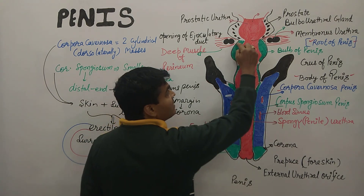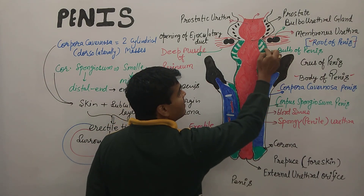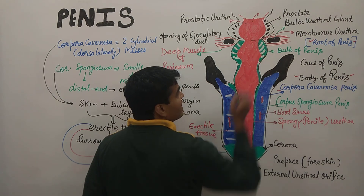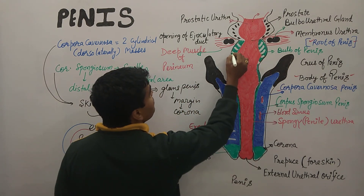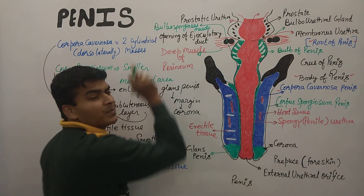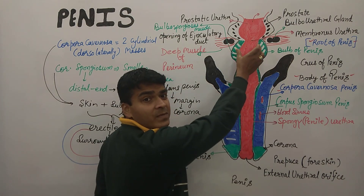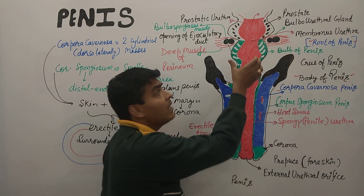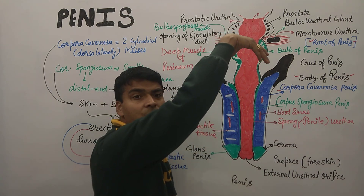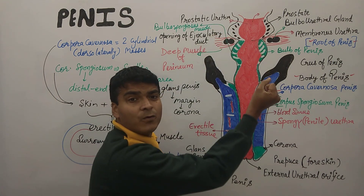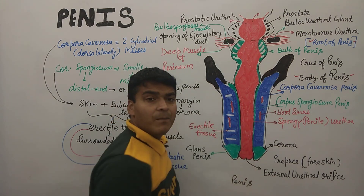The bulbospongiosus muscle is found here at the bulb of the penis. These muscles help in ejaculation — because when the bulbospongiosus muscle contracts, it assists in ejaculation.